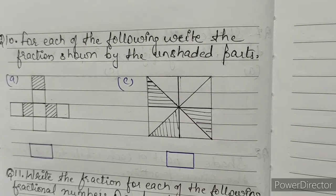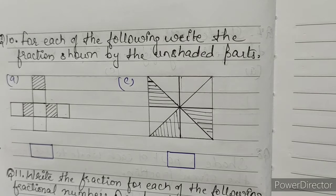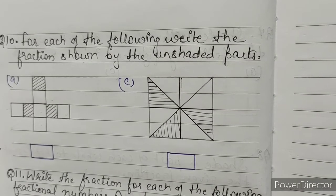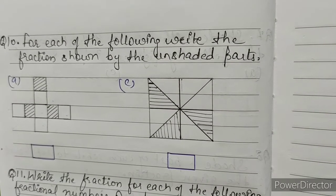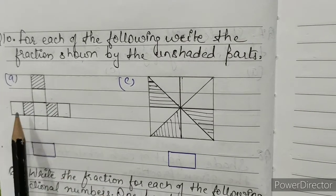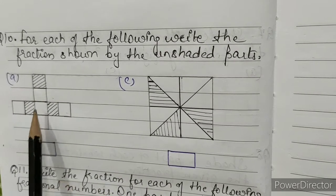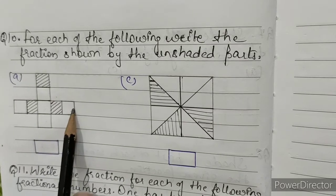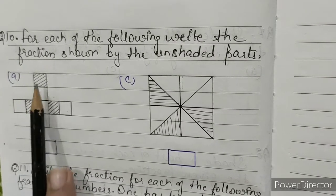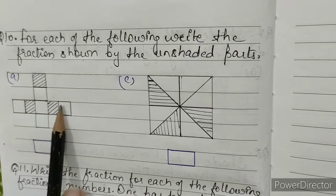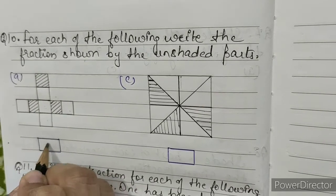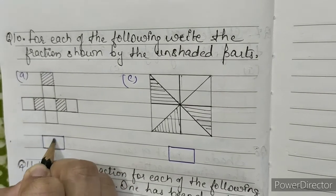Question number 10: for each of the following, write the fraction shown by the shaded parts. A: in this figure, 5 parts are shaded out of 8 total parts. So our fraction will be 5 by 8.